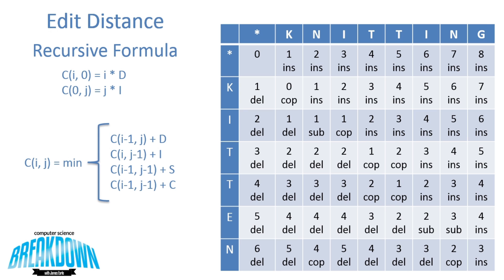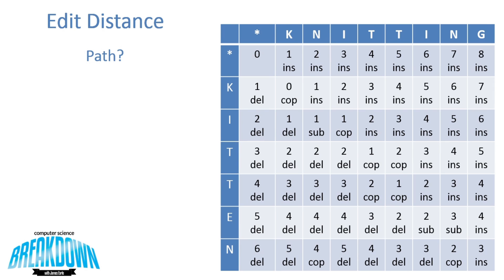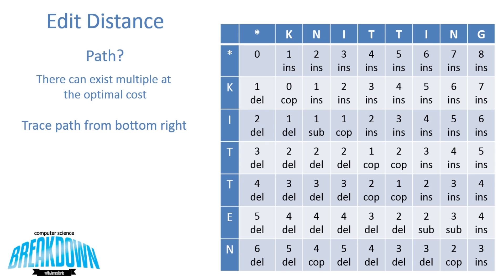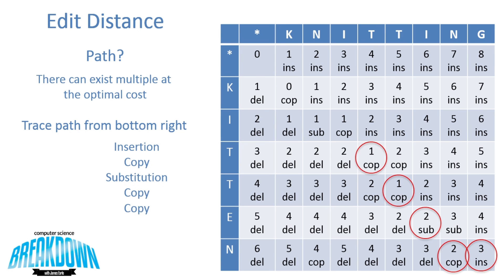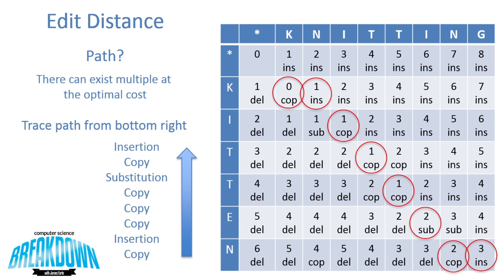With many dynamic programming solutions, we don't know the optimal series of operations to transform kitten into knitting — that's where tracing all operations comes in. Although multiple optimal paths can exist, we start in the bottom right corner. First an insertion — go one cell to the left. Then a copy — up and to the left. A substitution — up and to the left. Three copies — up and to the left each time. Then an insertion — strictly to the left. Then one more copy — up and to the left. This gives the sequence of moves to transform kitten into knitting, followed backwards.